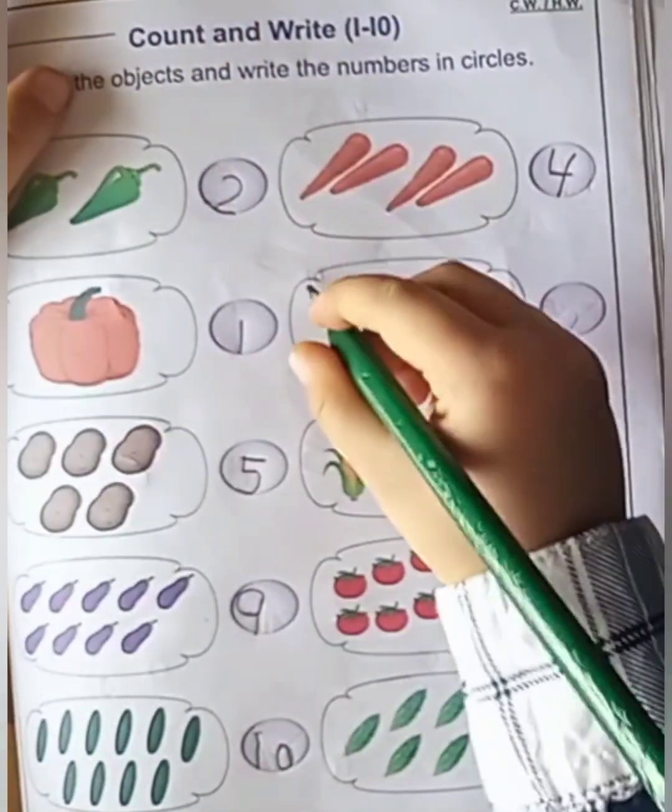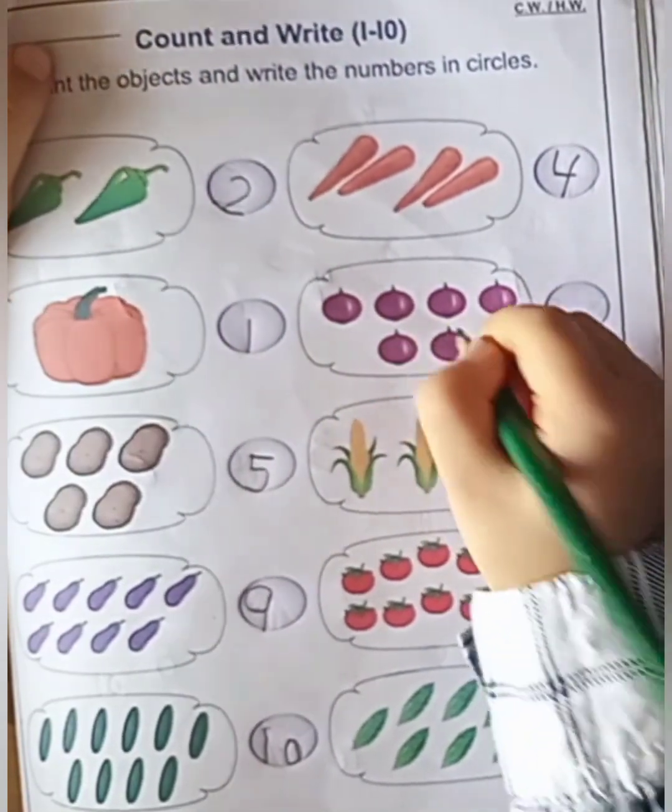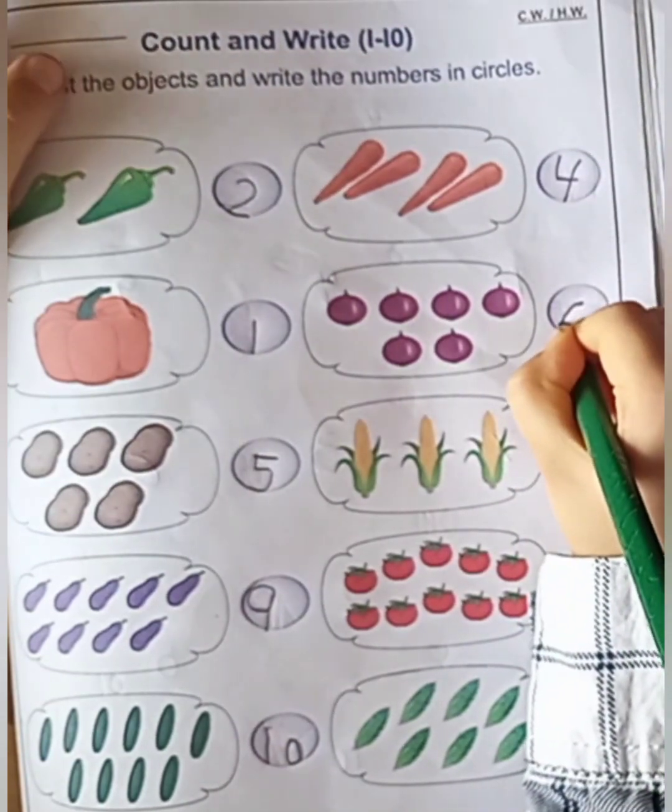Next. Onion. One, two, three, four, five, six. Very good. How many onions are there? Six onions.